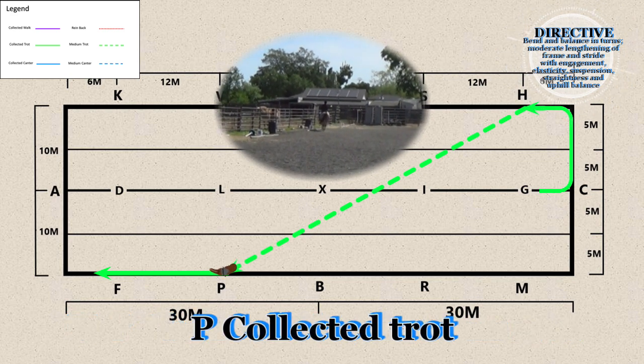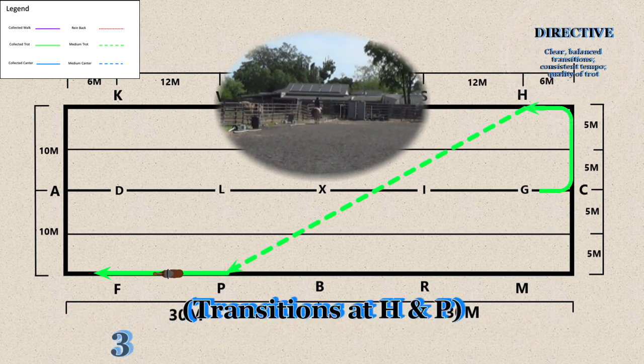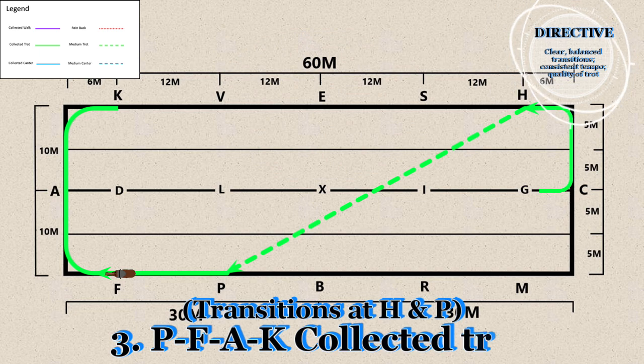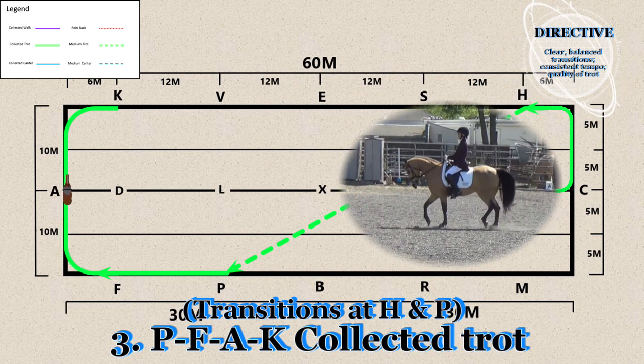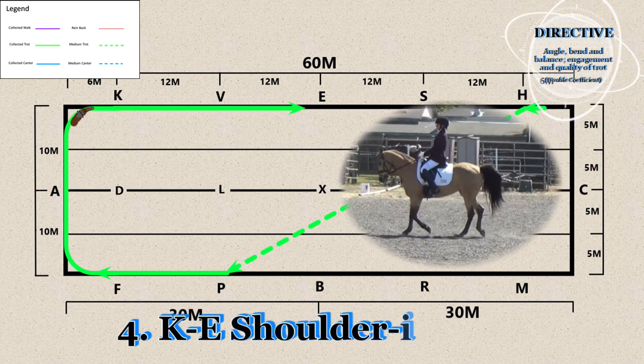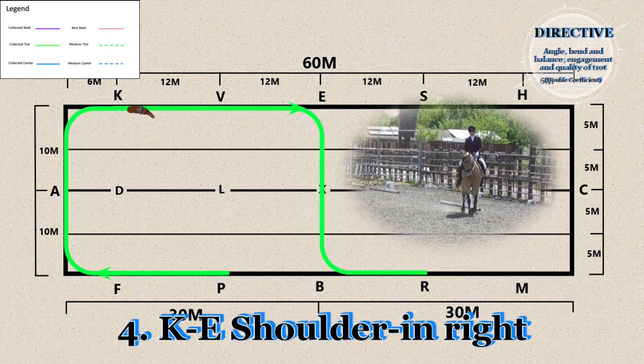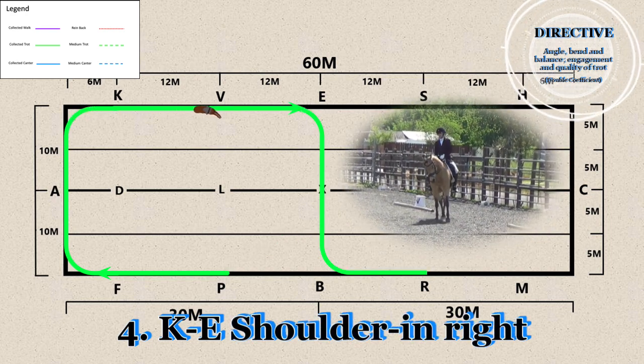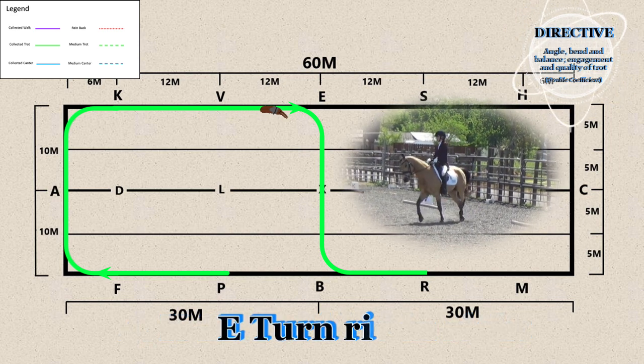3. P - Collected trot. 4. K through E - Shoulder in right. E - Turn right.